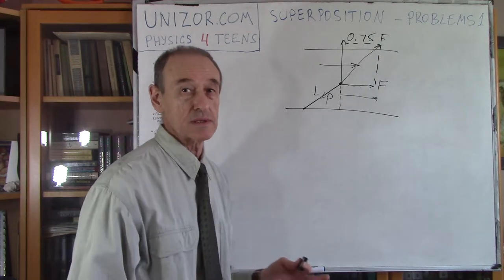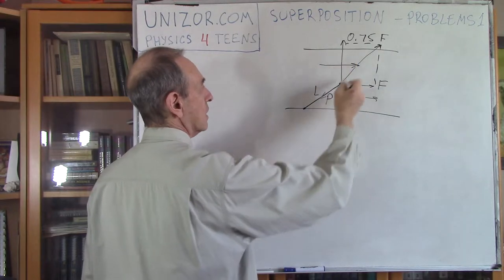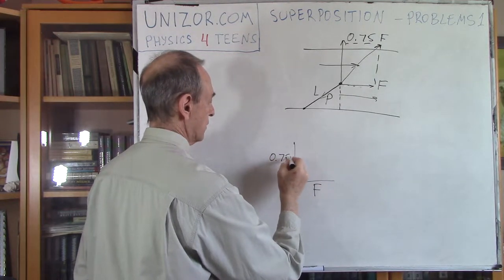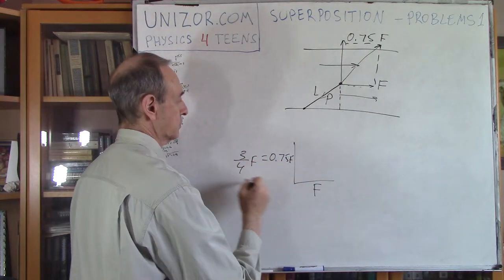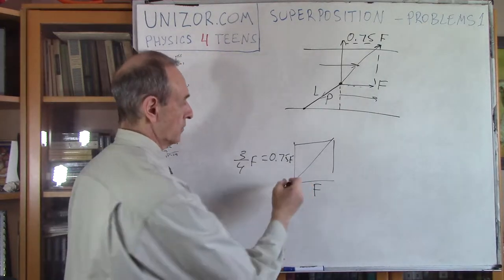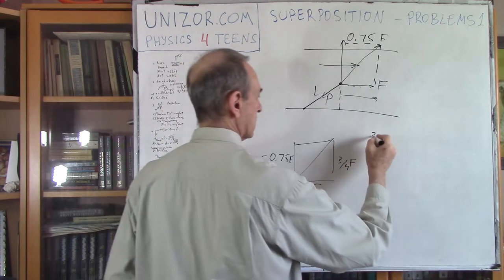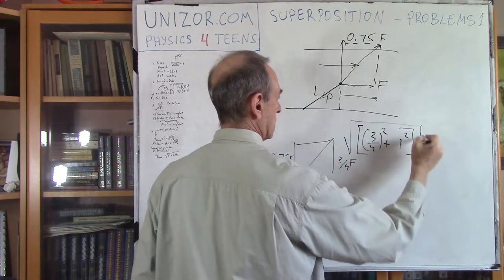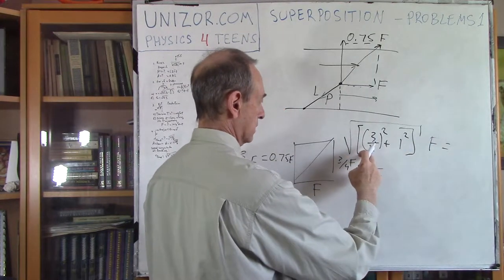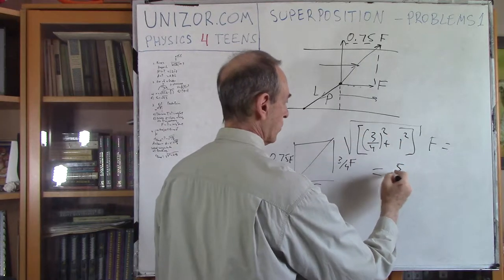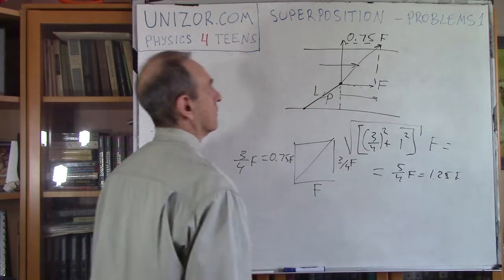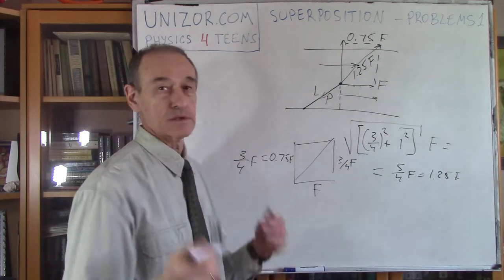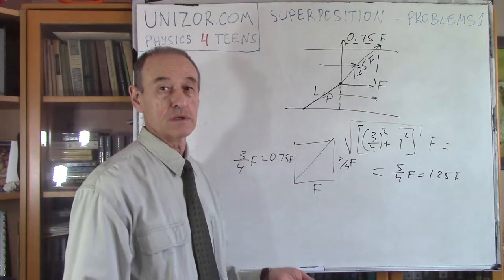This is a straightforward problem. If you know the two components — F and 0.75F — their resultant is the diagonal of a right triangle. That's three-quarters squared plus one squared, times F: which is 9/16 plus 16/16 = 25/16, so it's five quarters of F, which is 1.25F. This must equal the tension of the rope, because otherwise the boat would not stand still.